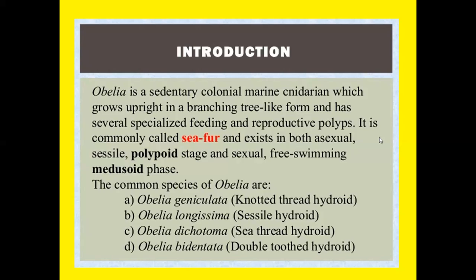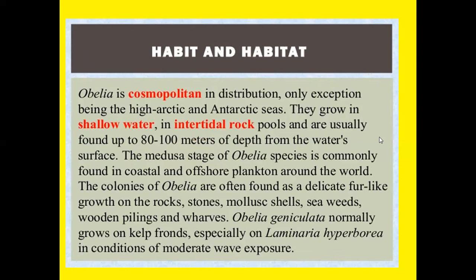Obelia is a sedentary, colonial marine cnidarian which grows upright in a branching tree-like form and has several specialized feeding and reproductive polyps. It is commonly called sea fur and exists in both asexual polypoid stage and sexual free-swimming medusoid phase. The common species of Obelia are four types: first is Obelia geniculata, known as knotted thread hydroid; second, Obelia longissima, sessile hydroid; third, Obelia dichotoma, sea thread hydroid; fourth, Obelia bidentata, double tooth hydroid.